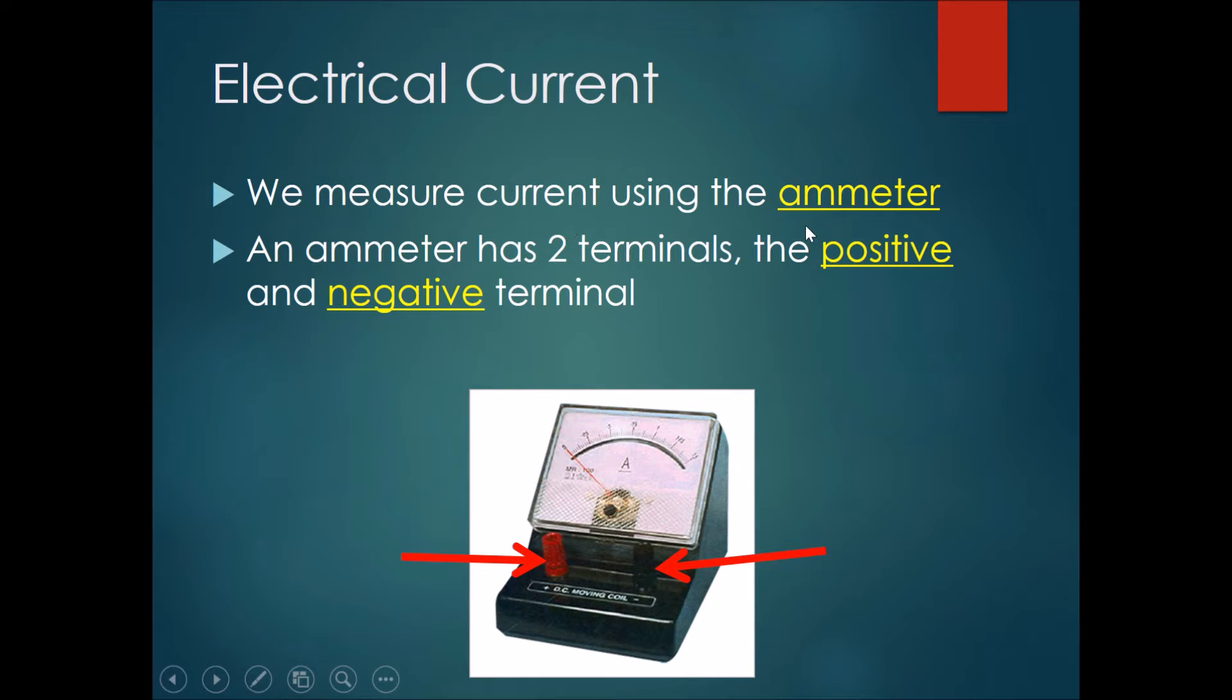We measure current using the ammeter. An ammeter has two terminals, the positive terminal and the negative terminal.